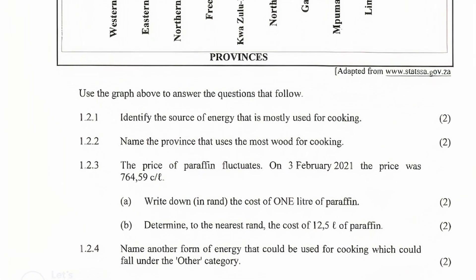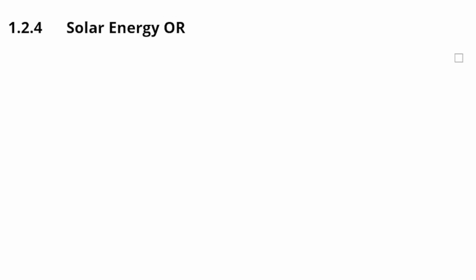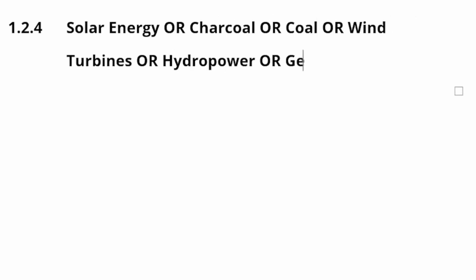Question 1.2.4 asks us to name another form of energy that could be used for cooking which could fall under the 'other' category. There are many other sources of energy that can be classified as other. Just to name a few: solar energy, charcoal, coal, wind turbines, hydropower, gel, or even paper. The question only asks you to name one, so any one of those examples will get you full marks.